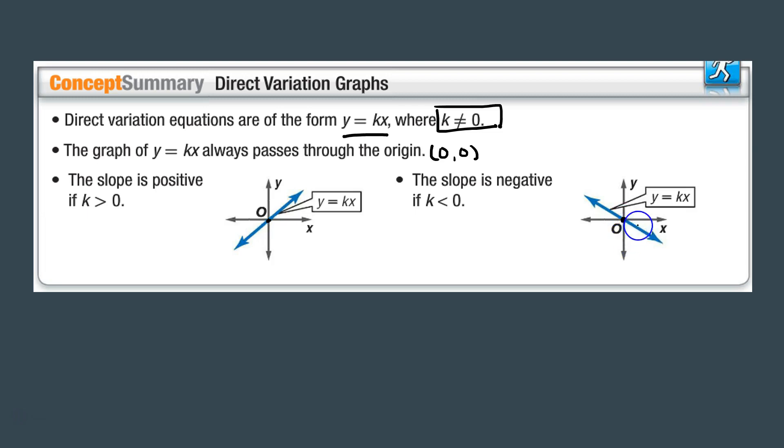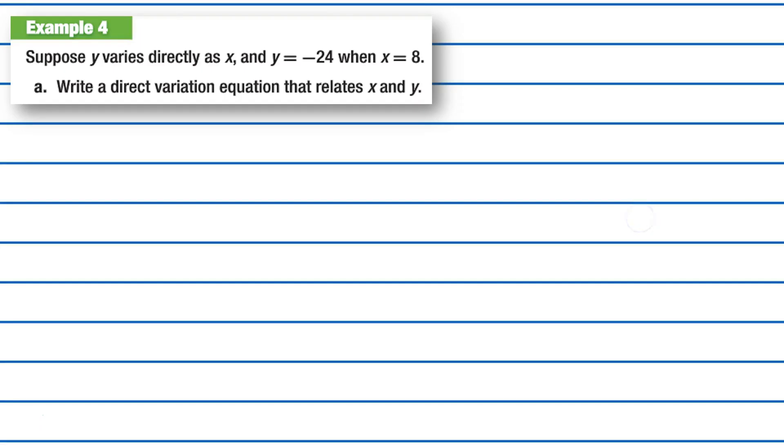Let's try Example 4. Suppose y varies directly as x, and y equals negative 24 when x equals 8, and we want to write a direct variation equation that relates x and y.